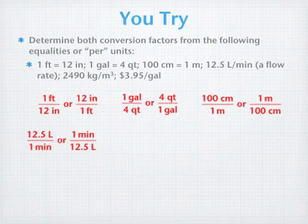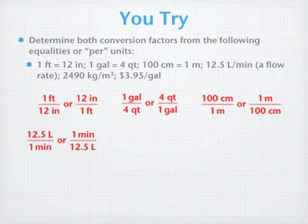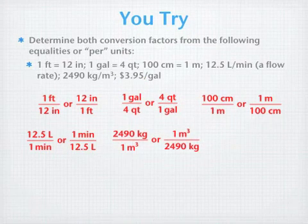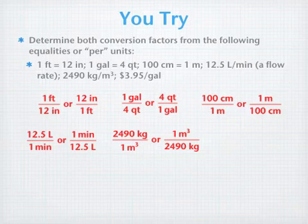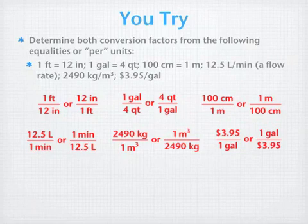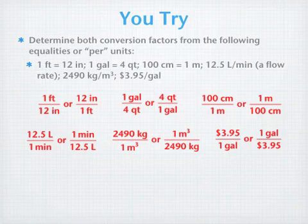In a flow rate, we can have 12.5 liters flowing for every minute, or 1 minute is how long it takes for 12.5 liters to flow. So, 2,490 kilograms over 1 cubic meter is another way of expressing density. Or 1 meter cubed over 2,490 kilograms. And finally, you can even use this for money. At the pump, pay $3.95 per gallon, or if you buy 1 gallon, it's going to cost you $3.95.